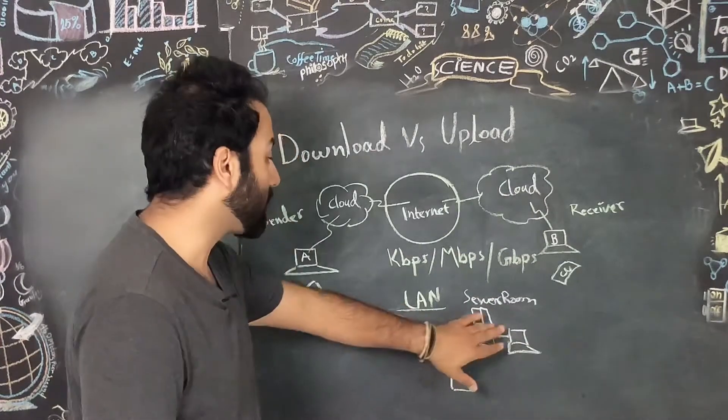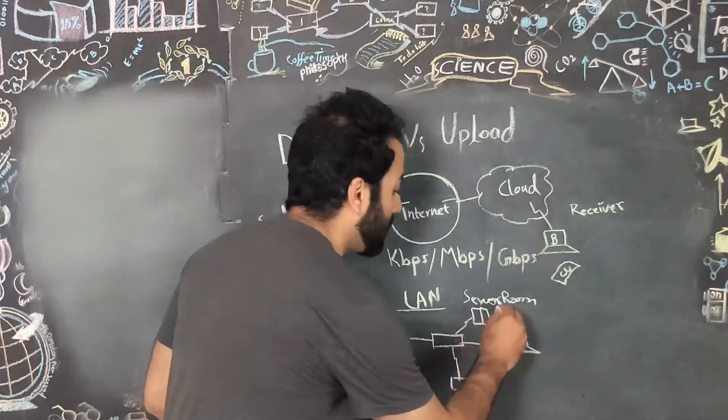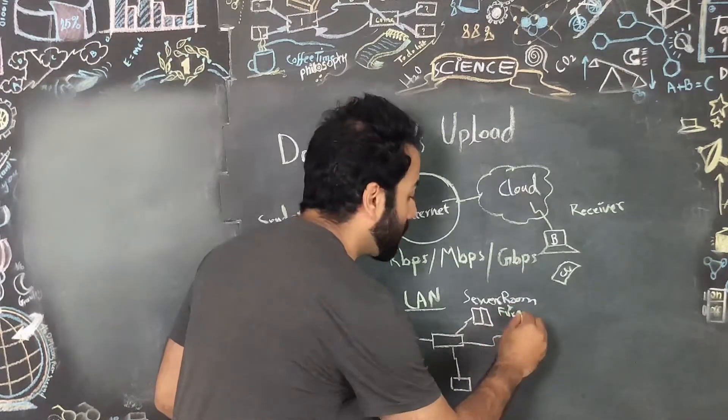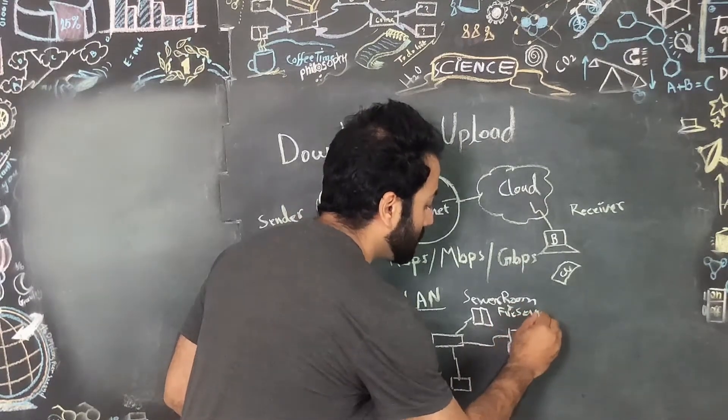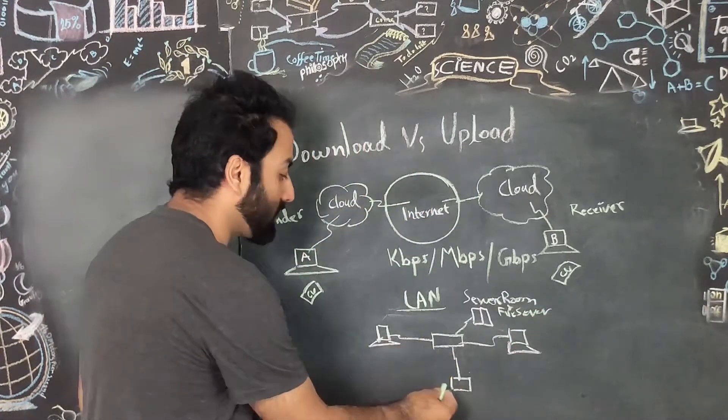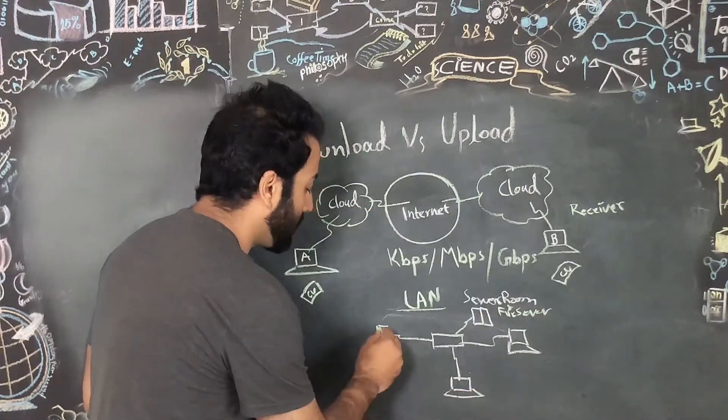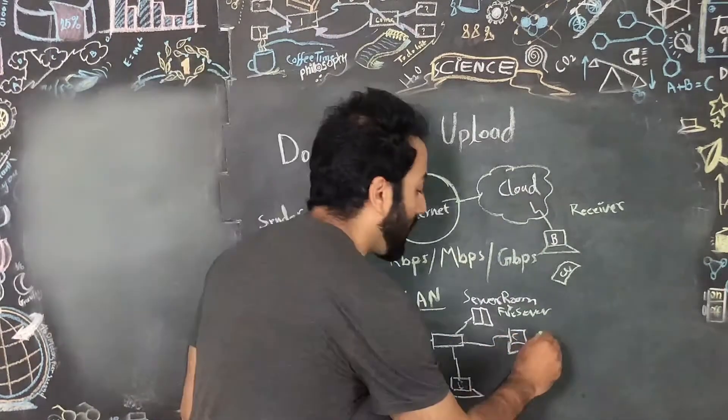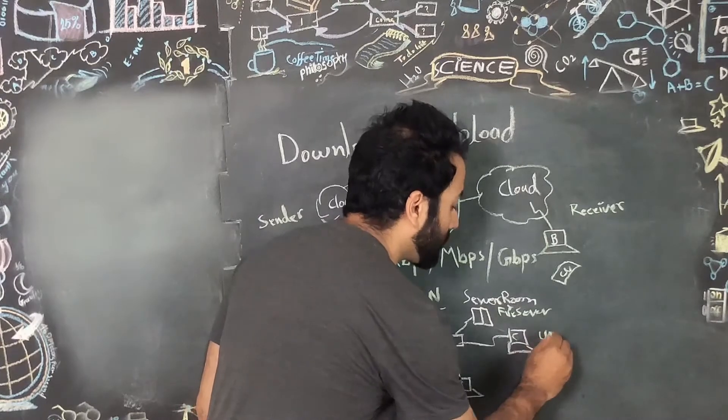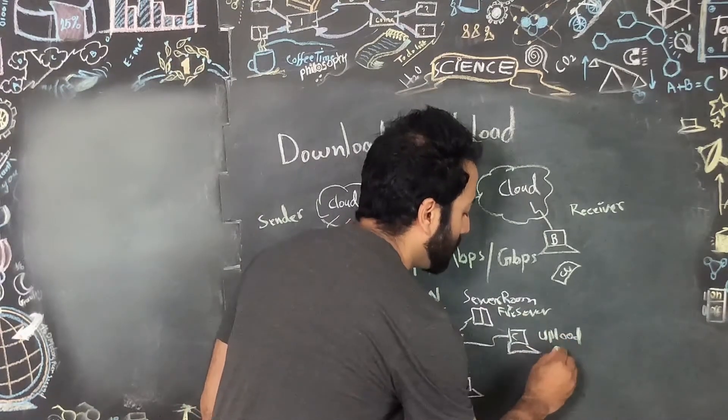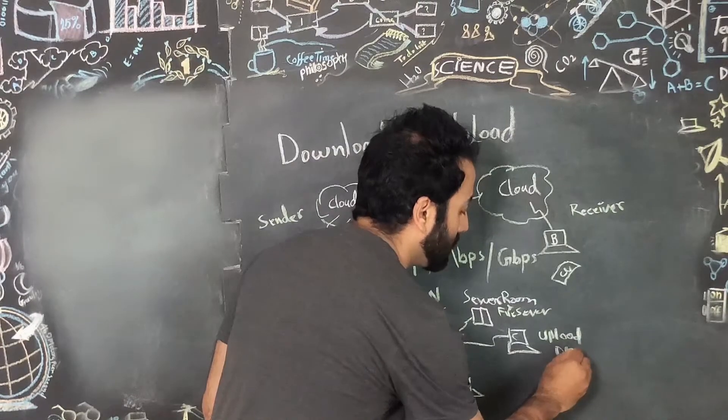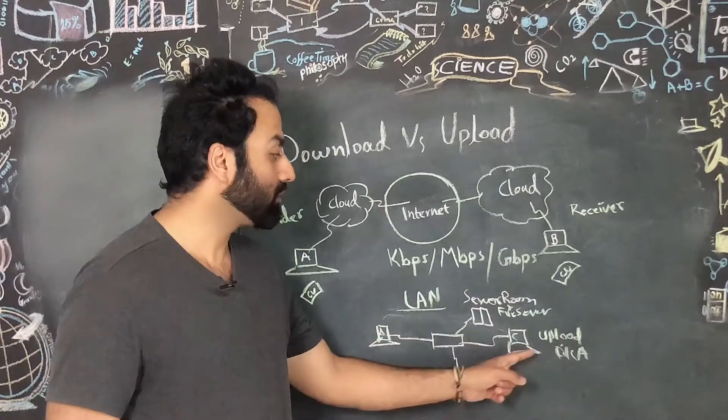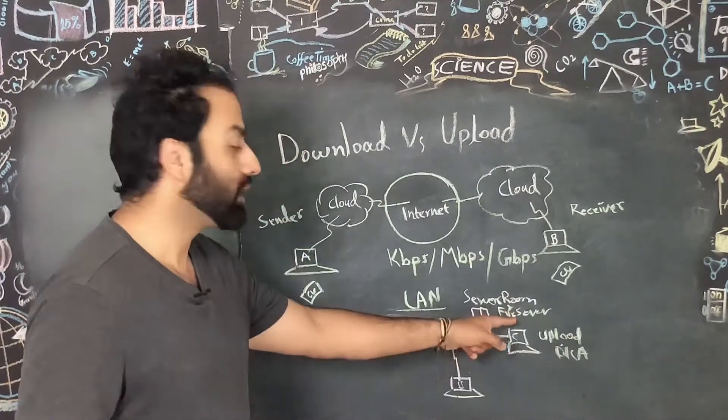For example, we have a data center here and we have a file server here. If any one of you are familiar about the file server, for example, computer A, computer B, computer C. So for example, computer C uploads a file by the name of file A in the file server.